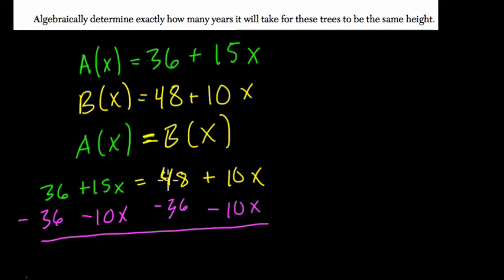Okay, so what happens now? Now, 48 minus 36 is 12, the 10Xs cancel out, goodbye, these 36 cancels out, goodbye, 15X minus 10X is 5X.